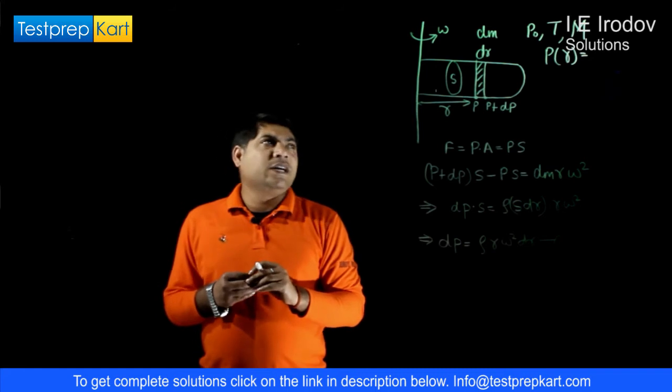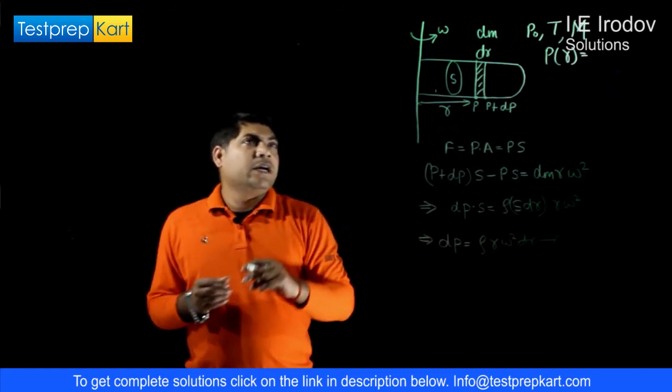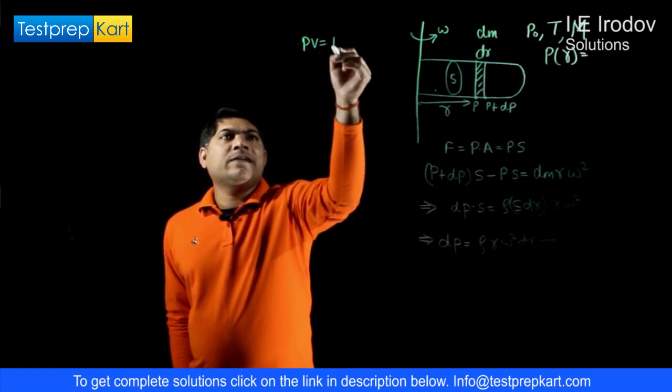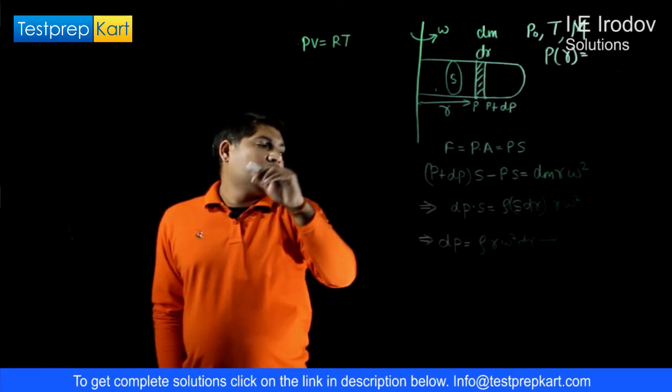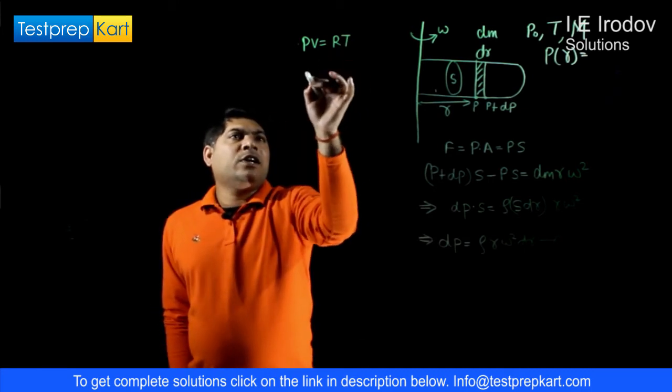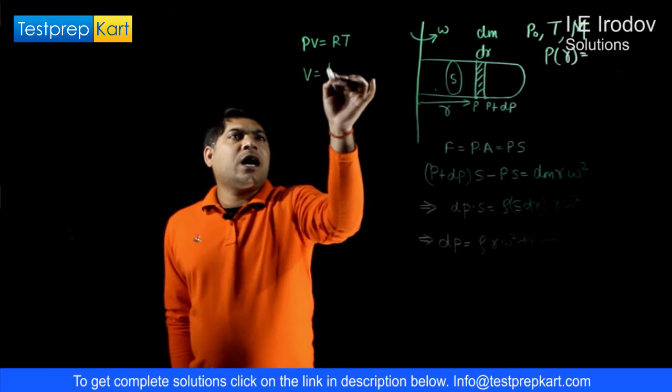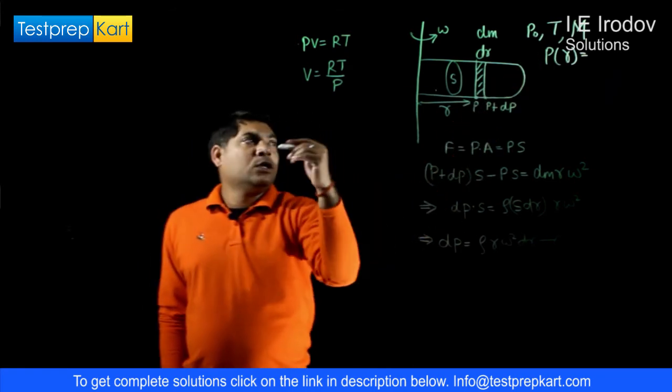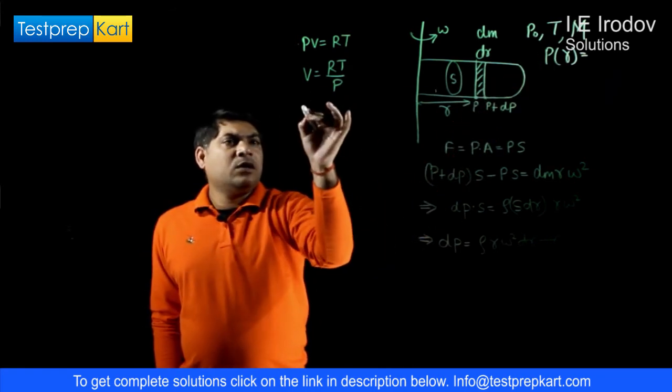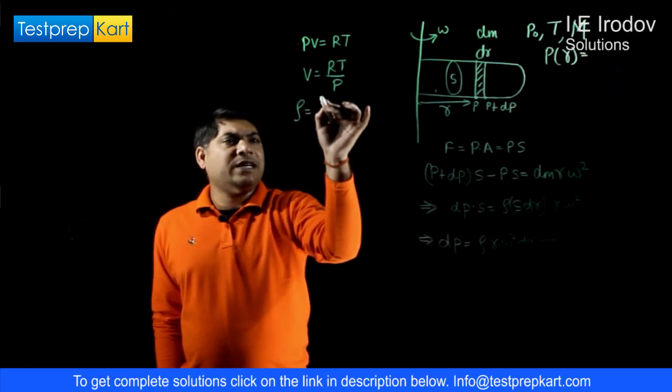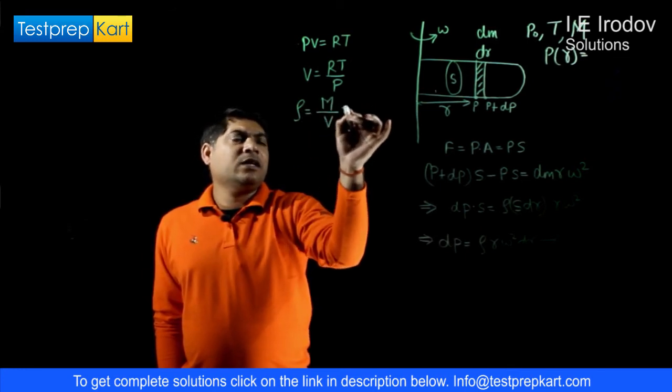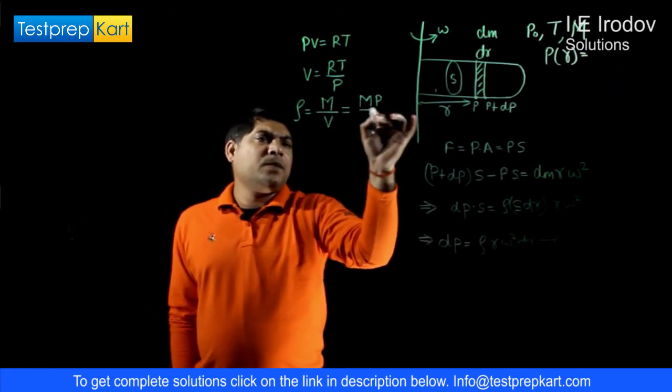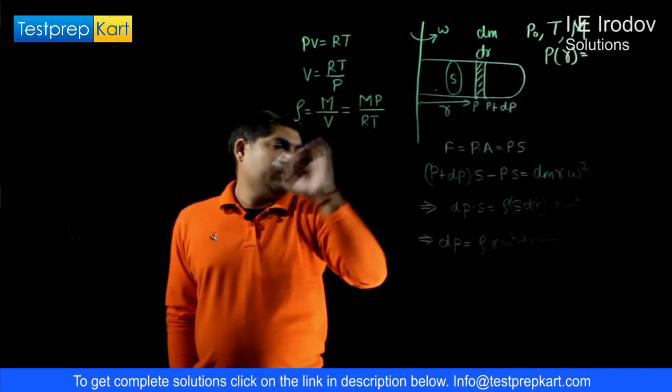Now we can use, if we consider one mole of gas, we can use PV equals RT, the gas equation. From here the volume would be RT over P. Now it is given that the molar mass is M. If we divide molar mass by the volume then we get the density, M over V. So we get density is MP over RT.